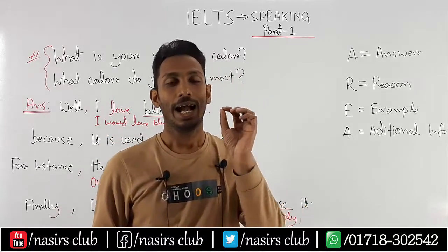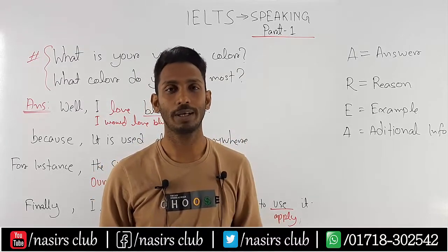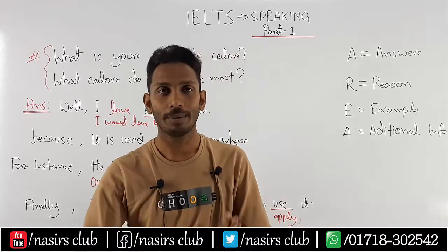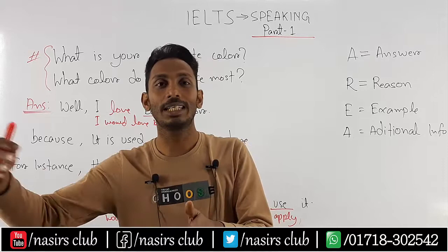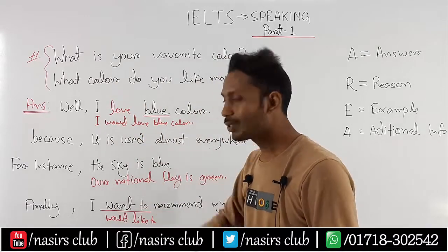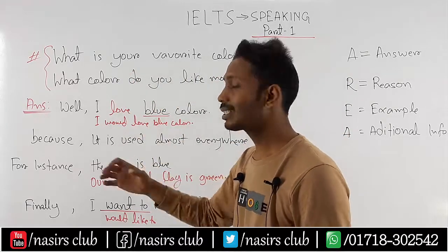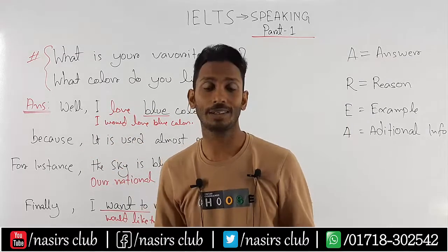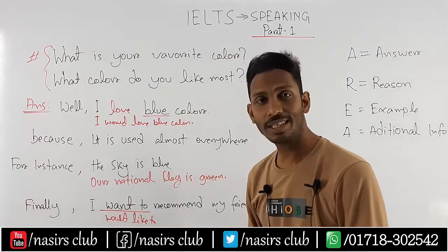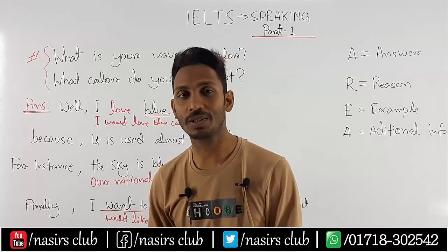The speaking module has 3 stages: Part 1, Part 2, and Part 3. Part 1 normally has direct questions. Now let's try a full Part 1 answer. Question: 'What is your favourite colour or what colour do you like most?' Answer: 'Well, I'd like to love blue colour because everywhere blue is used. For instance, the sky is blue. Finally, I'd like to recommend my friends and family members to apply it.'